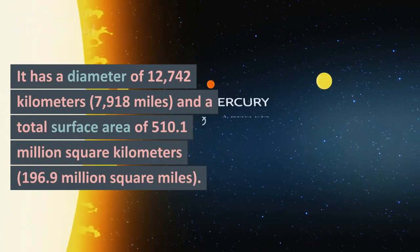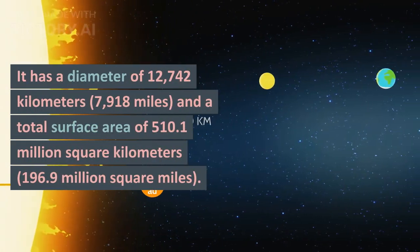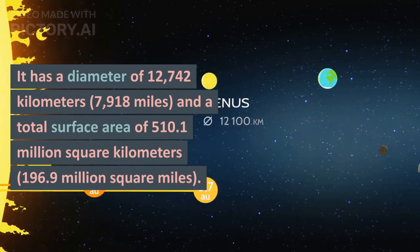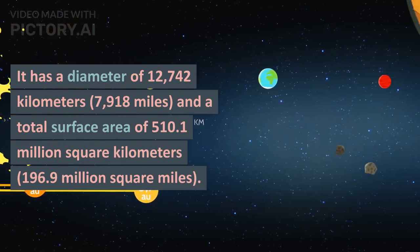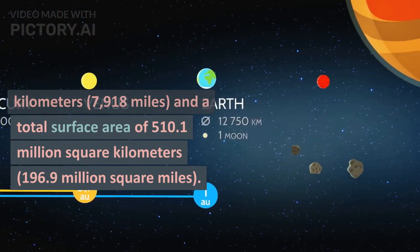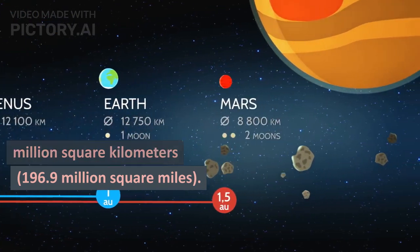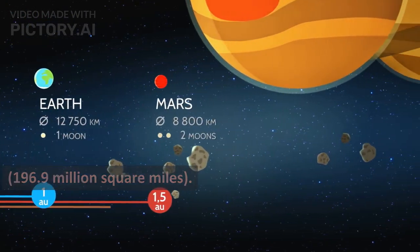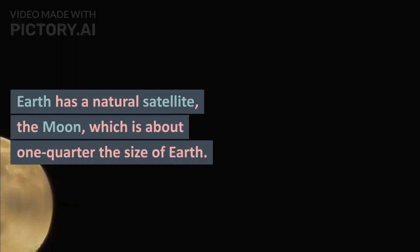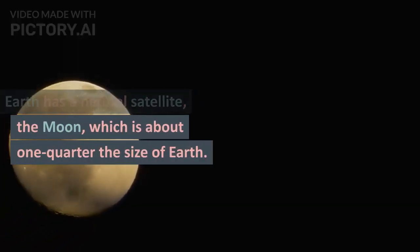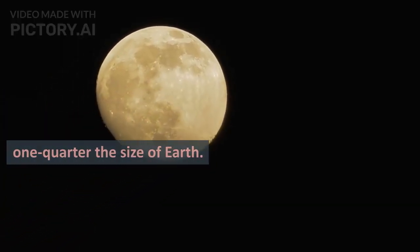It has a diameter of 12,742 kilometers and a total surface area of 510.1 million square kilometers. Earth has a natural satellite, the Moon, which is about one quarter the size of Earth.